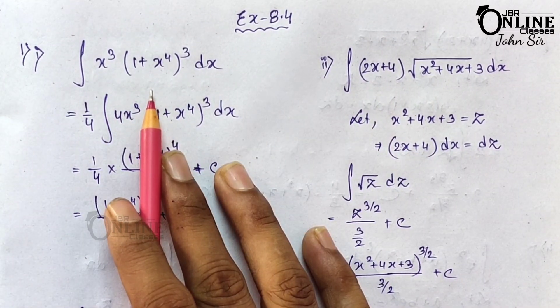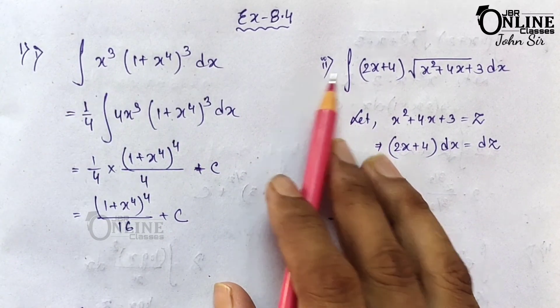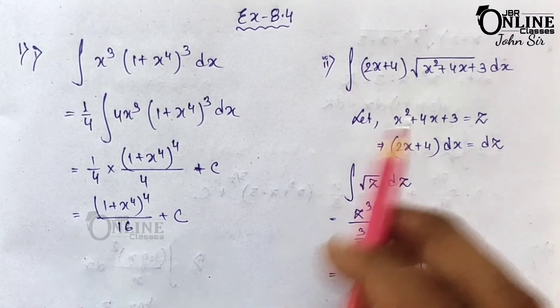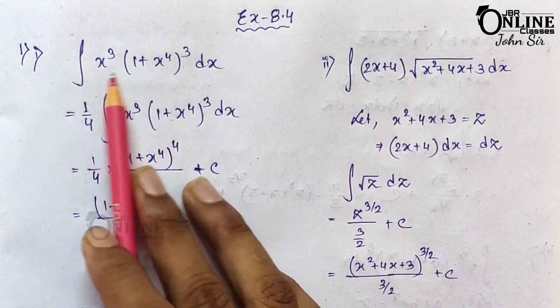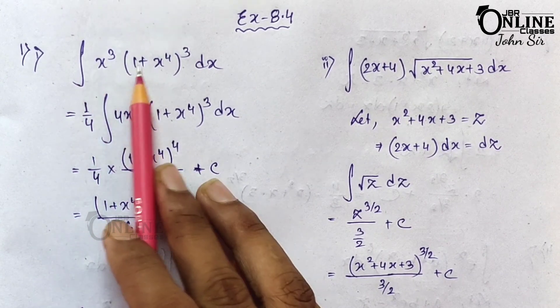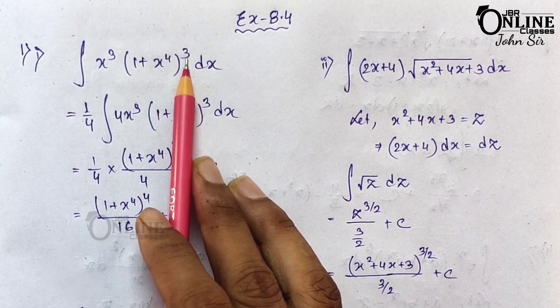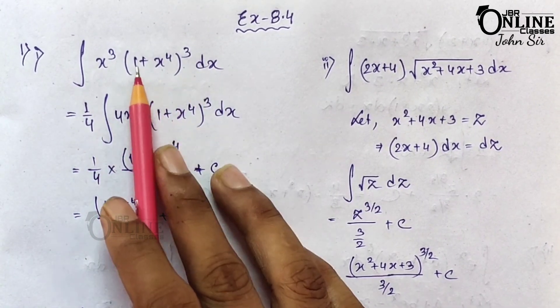Now, for the first problem I will solve using the formula directly, and for the second one I will solve step by step. The first problem is: ∫x(1 + x⁴)³ dx.